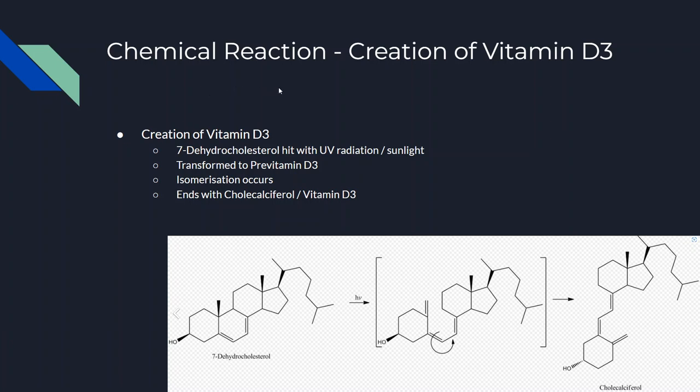Now I'm going to be talking to you about the chemical reaction for the creation of vitamin D3. First, we have our 7-dehydrocholesterol, and then that gets hit with UV radiation, also known as sunlight. And it is transformed into this pre-vitamin D3. So 7-dehydrocholesterol plus sunlight equals pre-vitamin D3.